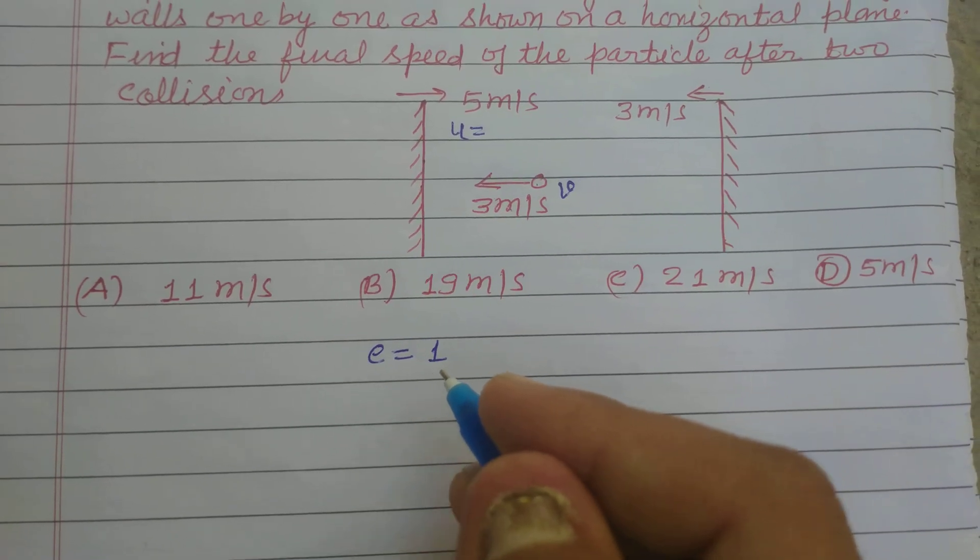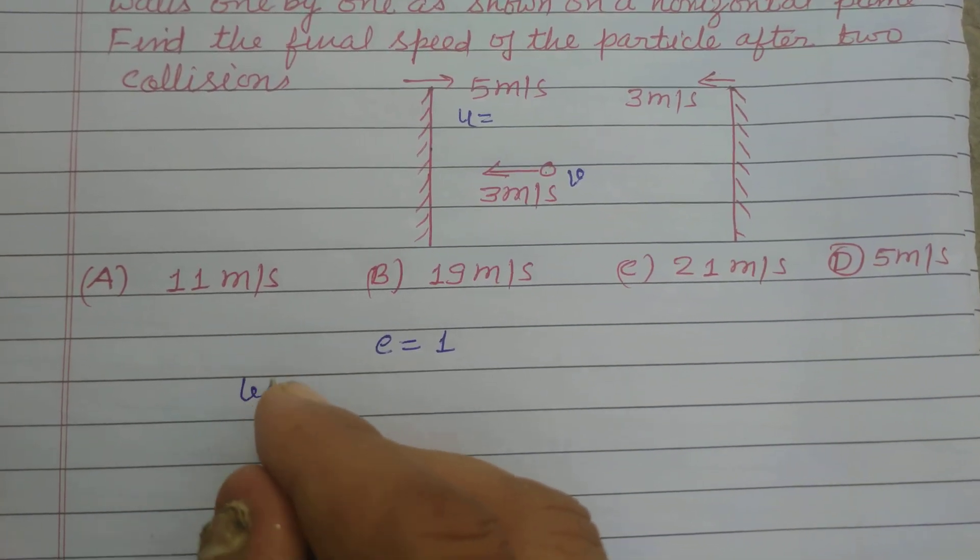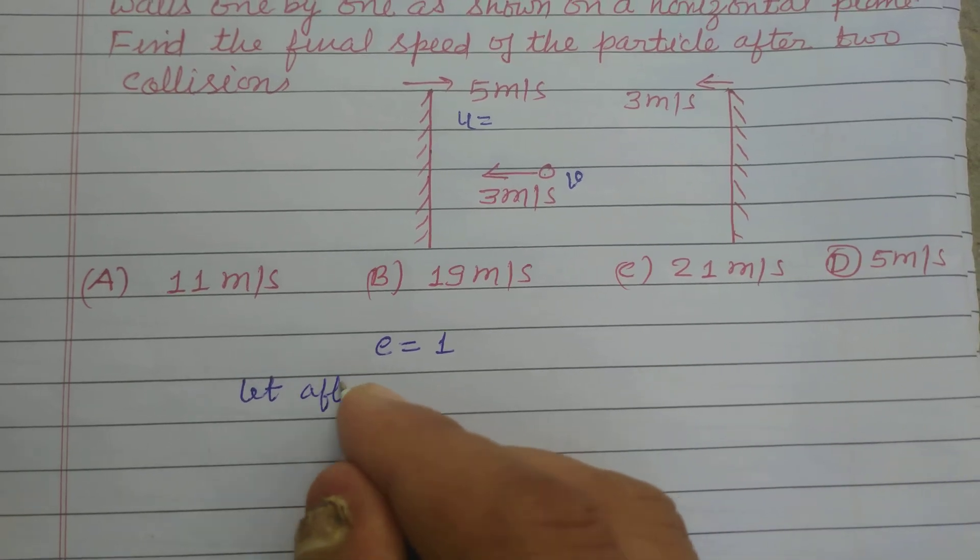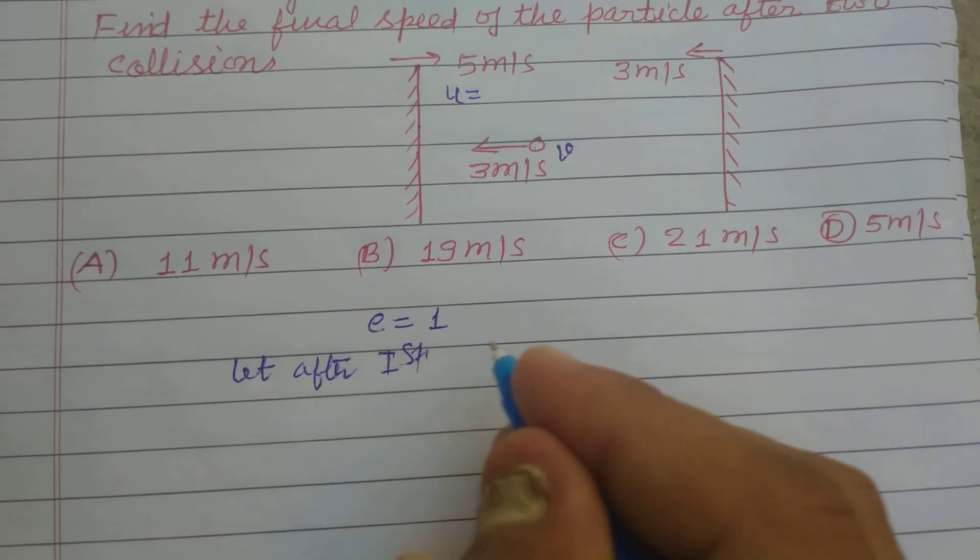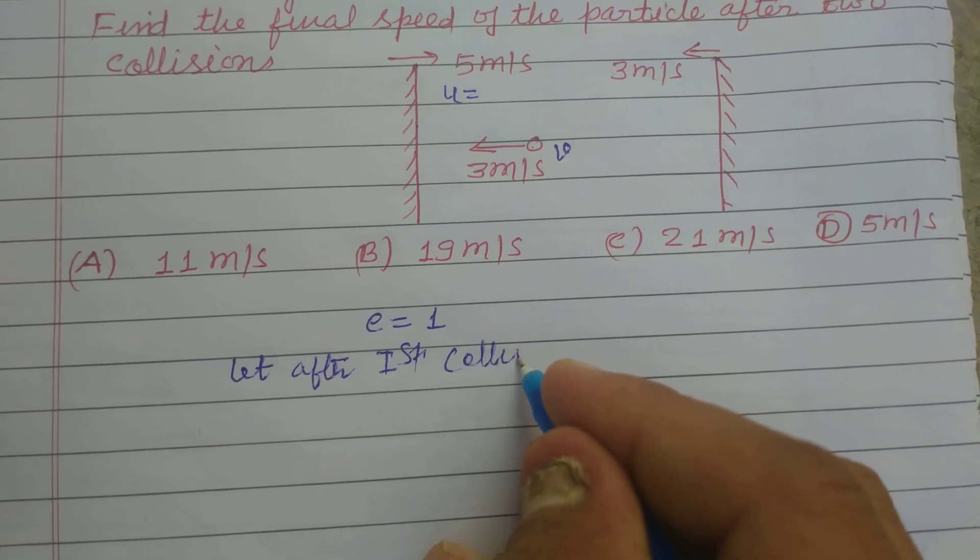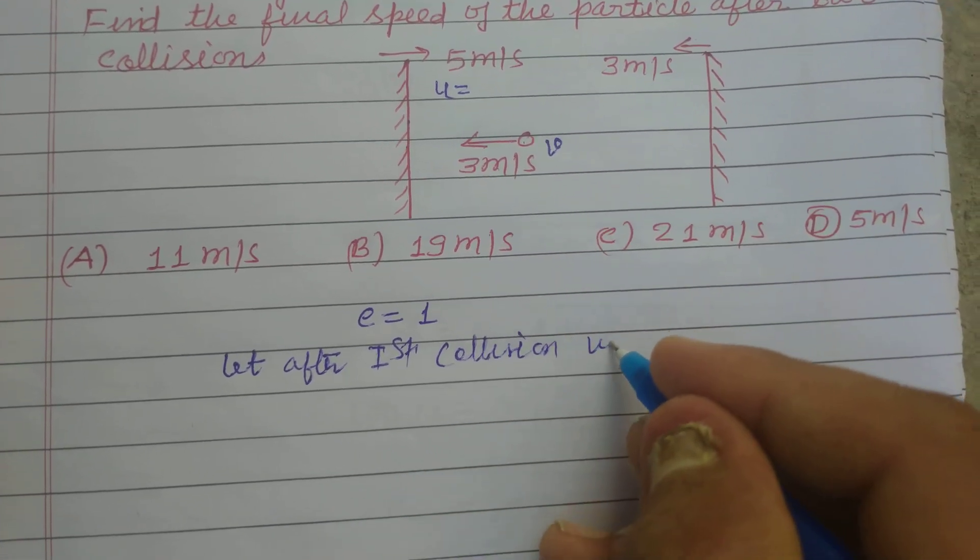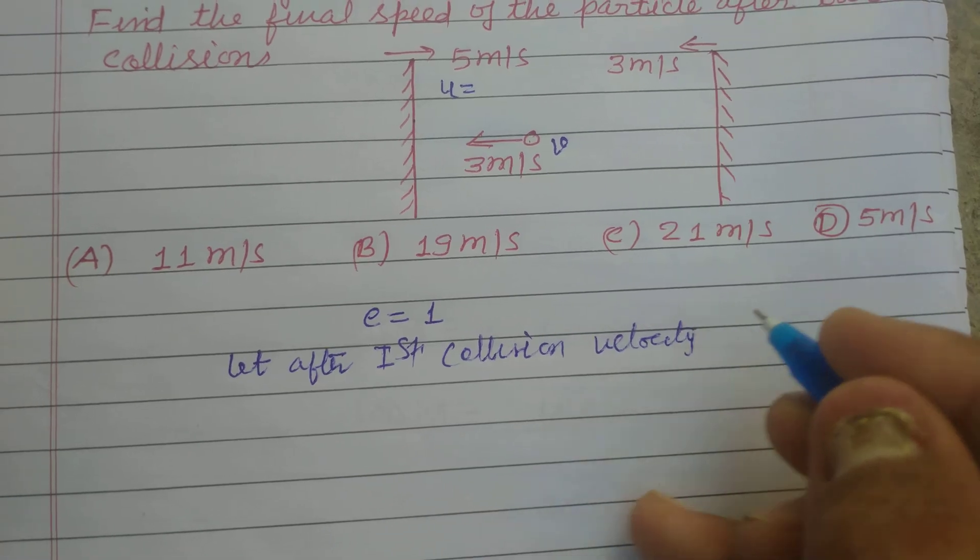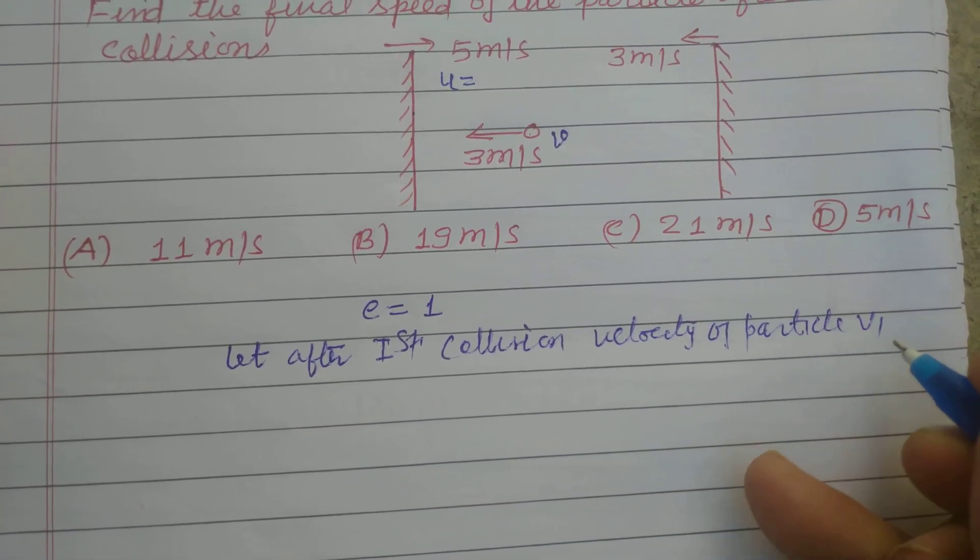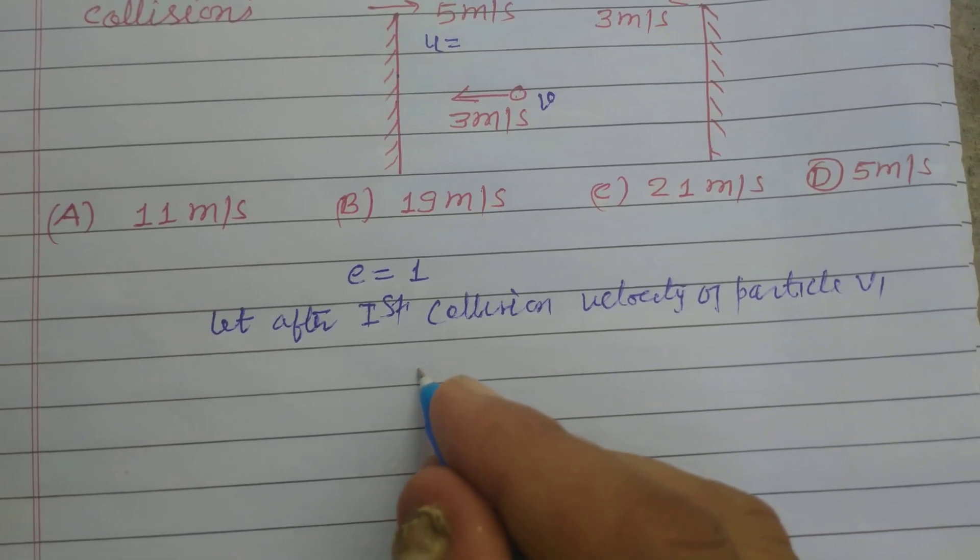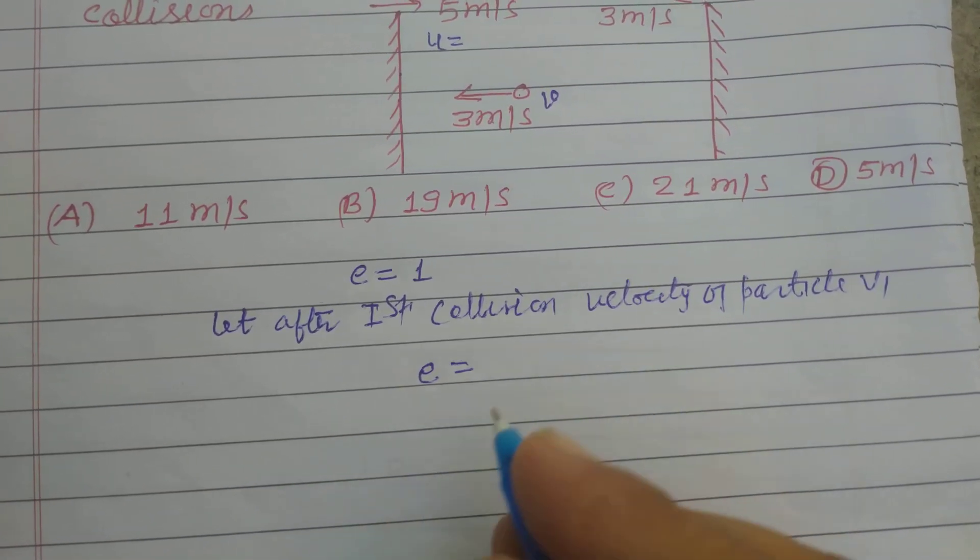So let after the first collision, the velocity of the particle be v1.